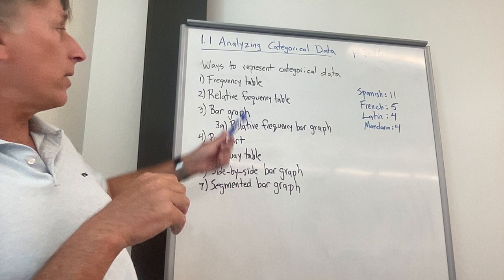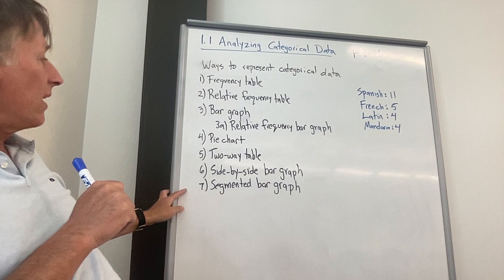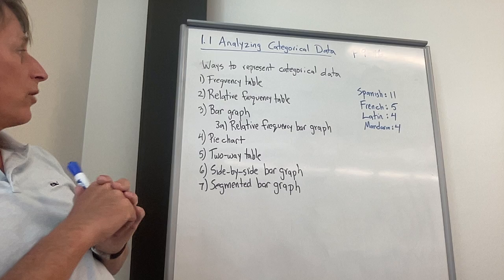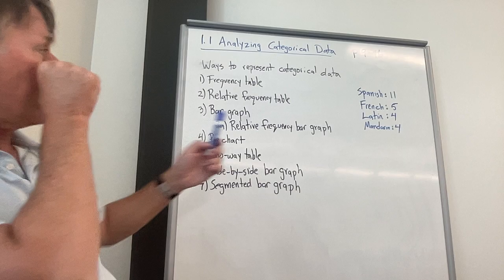What we're going to get into here is different ways to represent categorical data. I've actually listed seven, really eight different ways here. If you want to pause the video and write these down at some point in your notes, this video and the next one will be marching through talking about what all these mean.